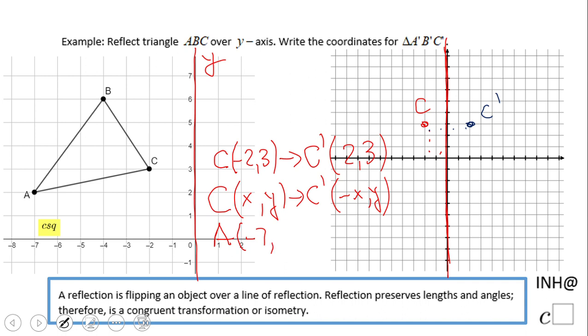For example, A is at (-7, 2), so A prime is going to be (7, 2). And the last one, point B, which is at (-4, 6), becomes B prime at (4, 6). The y stays the same.